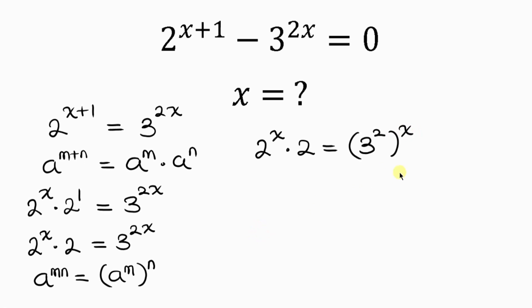Simplifying further, we have 2 to the x times 2 on the left, equal to 3 squared raised to the x, which is 9 to the x, on the right.